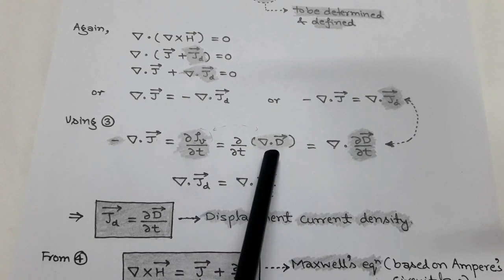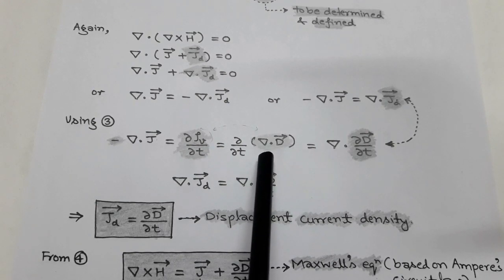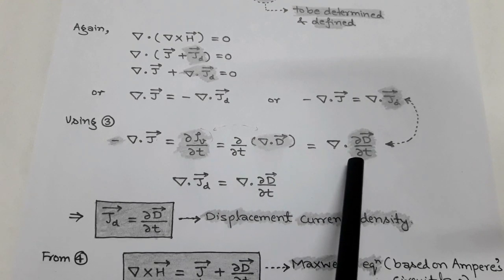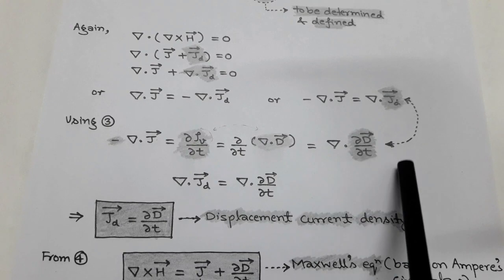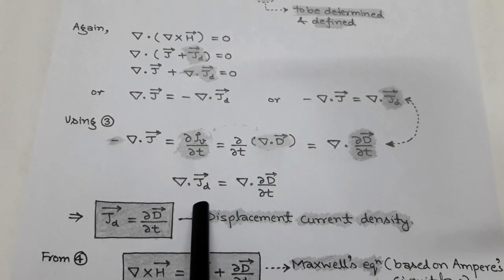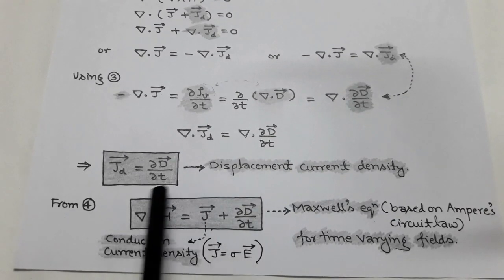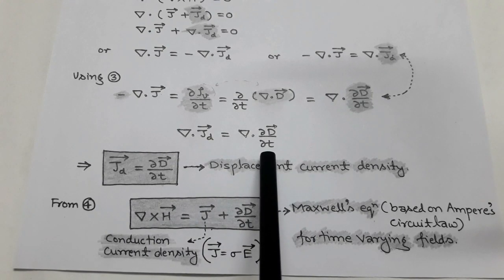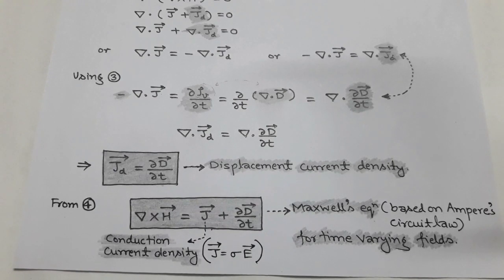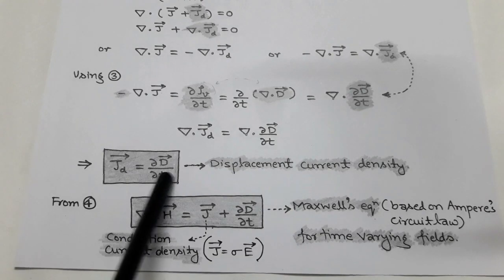In place of rho_v, we can write divergence of D vector. So the divergence of electric flux density D vector is equal to volume charge density rho_v, that is from Gauss's law in electrostatics. So we take del upon del t of D vector, and it becomes divergence of del D vector upon del t. Now we equate both equations and find that divergence of J_d vector is equal to divergence of del D vector upon del t. From here, we get displacement current density J_d vector which is equal to del D vector upon del t.